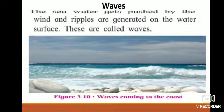Waves break in the shallow waters near the coast. When we see the waves coming they appear to be very big, but when they reach the coast they break. Large or small waves are formed continuously at the surface of the sea. Generation of waves is a natural and regularly occurring phenomenon.